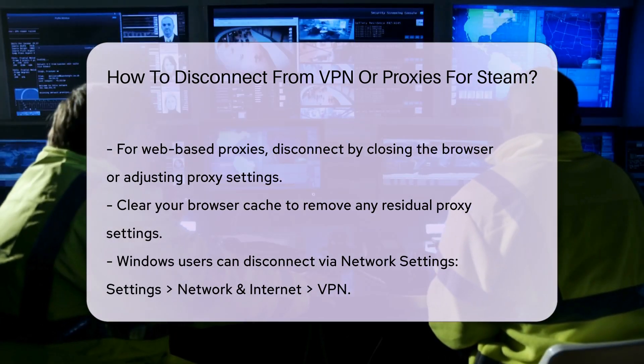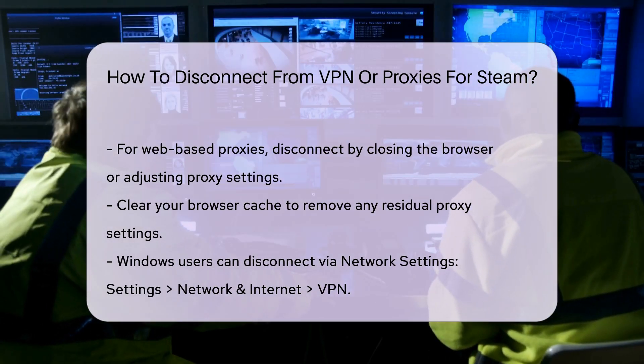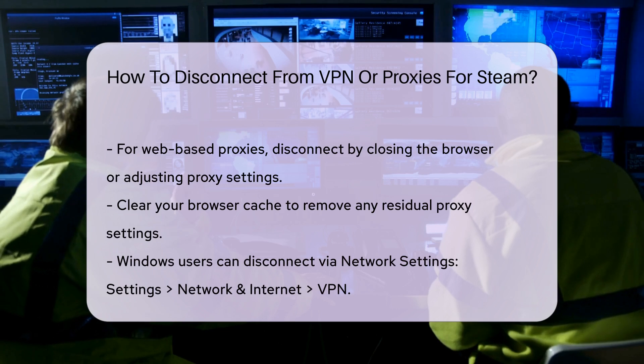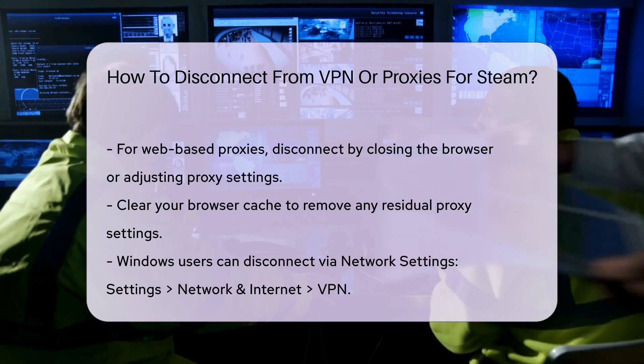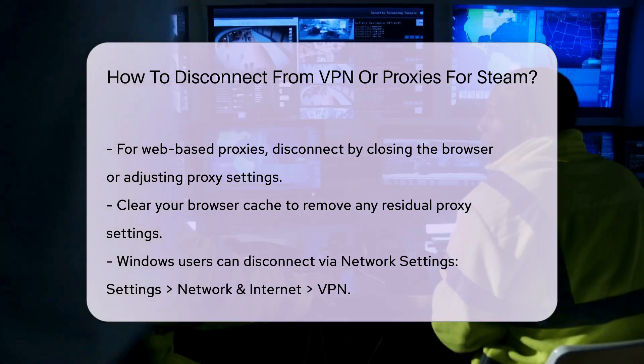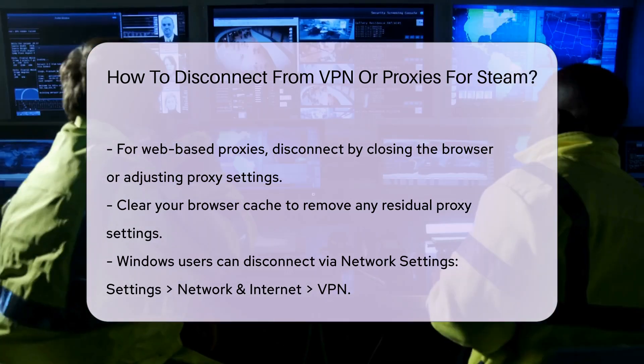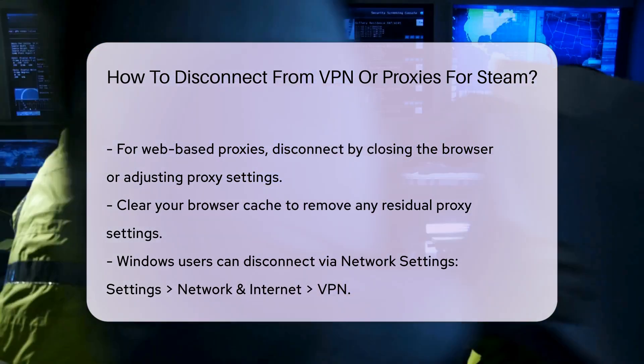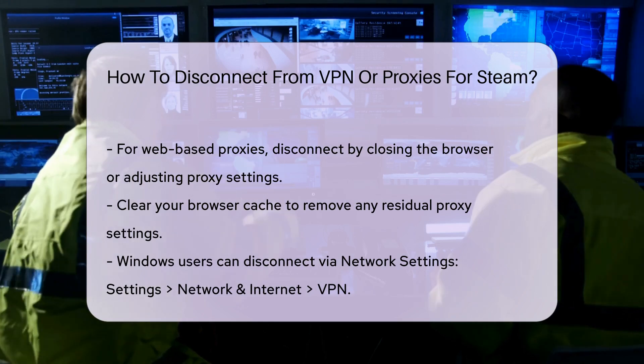On macOS, open System Preferences, select Network, and choose the VPN connection. Click on Disconnect to cease the connection.